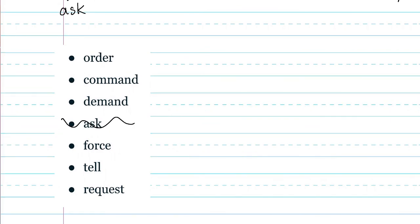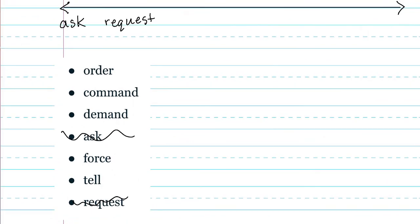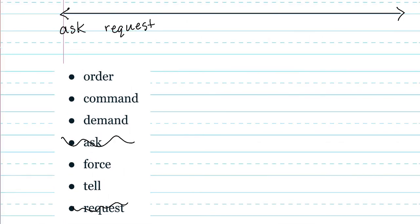What would come next? Now one of our words was to politely ask for something. That is request. So I'm going to put request next. These are still very polite ways of asking for something or getting something that we want. What would go next? I think I would put tell. I think force and demand are very strong. So I'm thinking these two will go somewhere on this side.